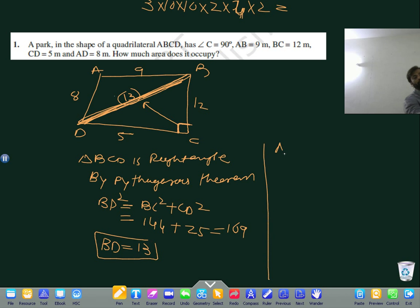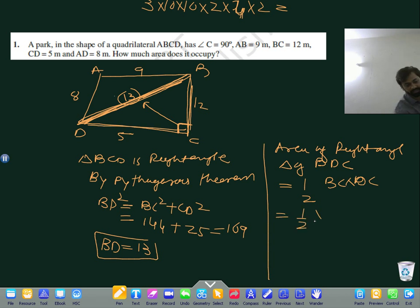Now area of right angle triangle BDC equals one half BC into DC, which equals one half times 12 times 5 equals 30 meter square. We got the area of triangle BCD.